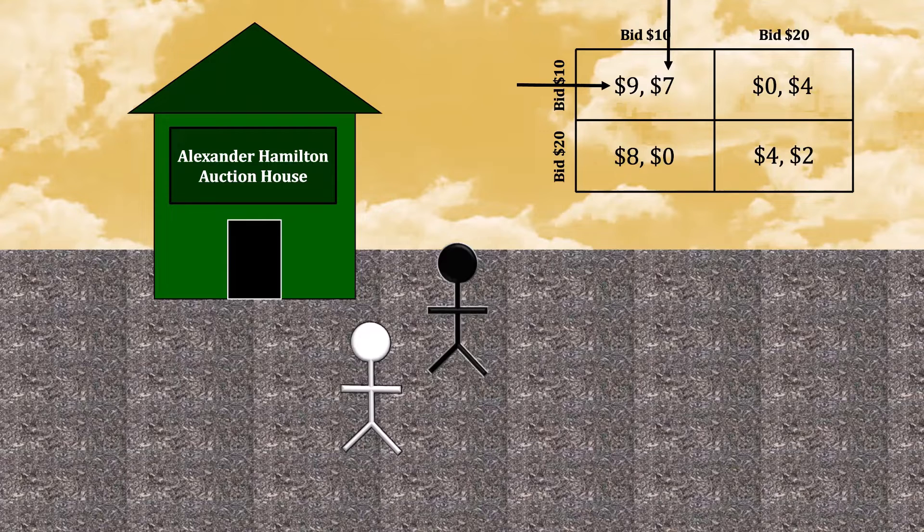Notice how this outcome is self-reinforcing. If you expect the stranger to bid $10, then you want to bid $10. And if the stranger expects you to bid $10, then they want to bid $10, which reinforces your decision to bid $10, which reinforces their decision to bid $10, and so forth.